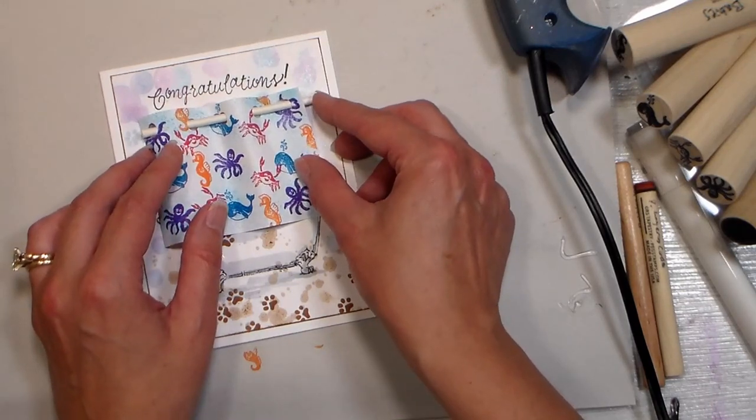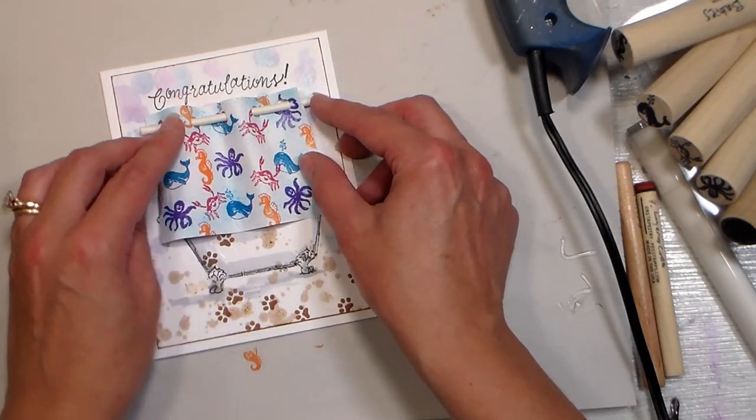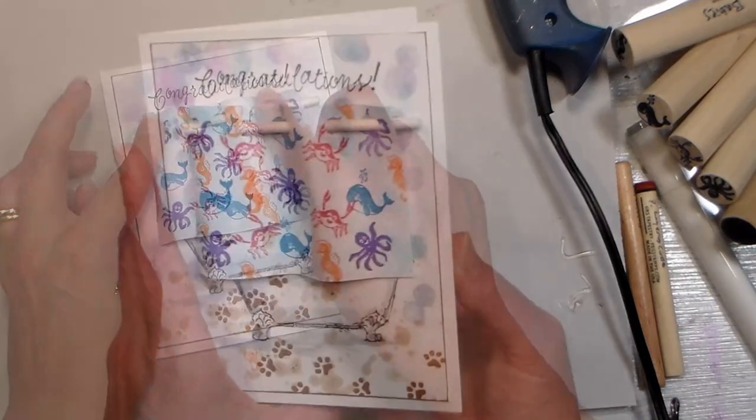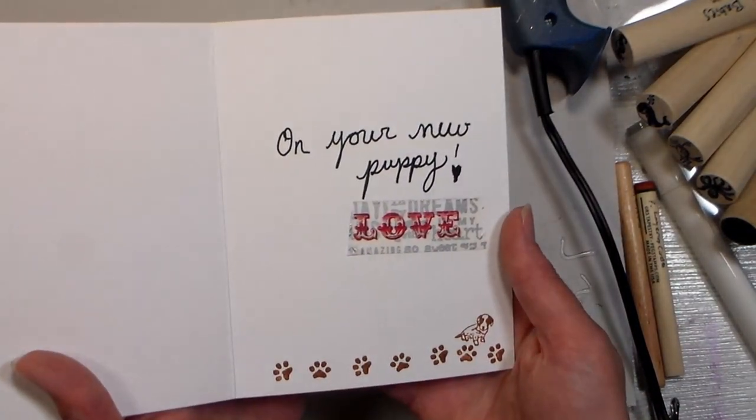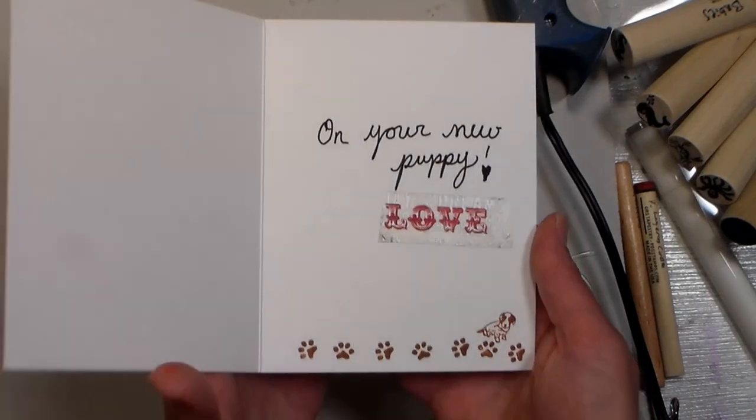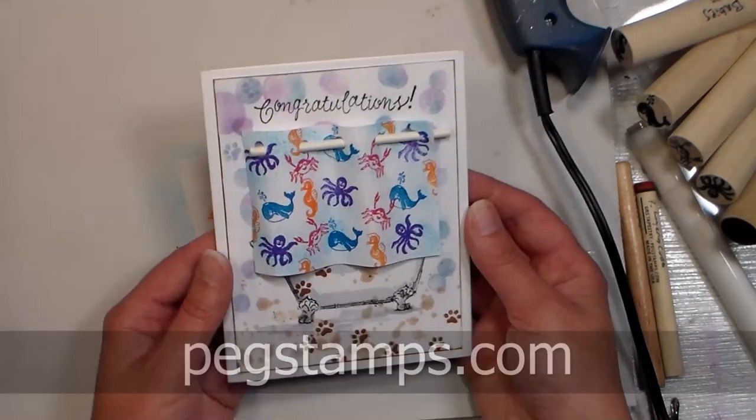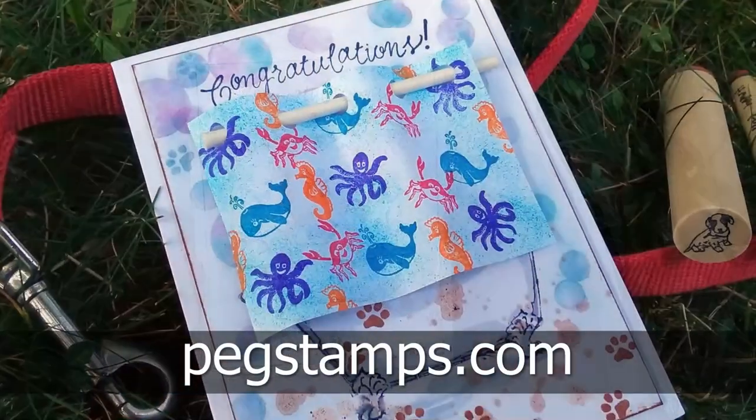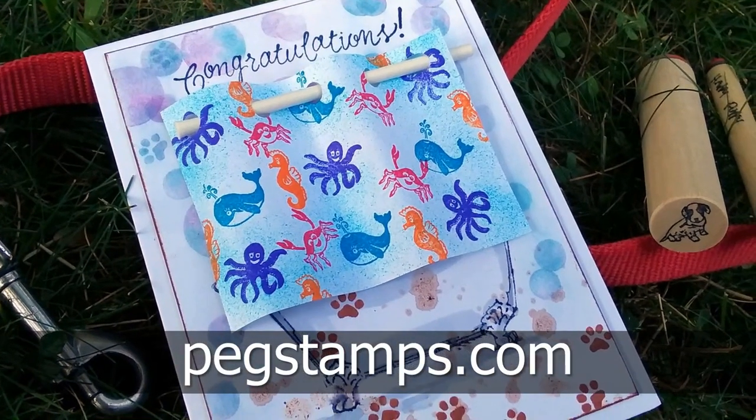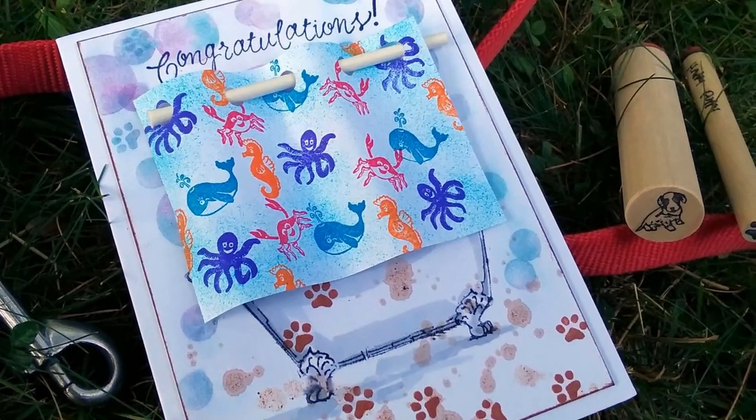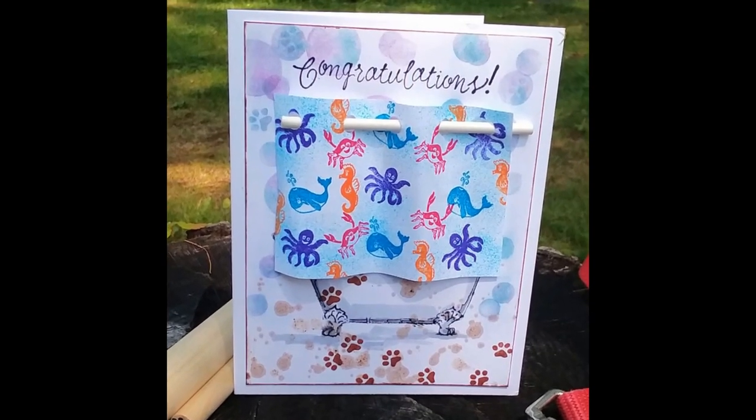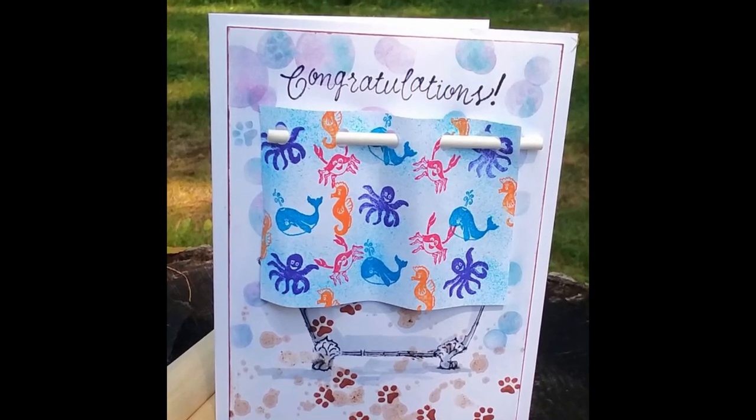And that's pretty much it. I hope you enjoyed this tutorial. I know it's kind of an odd occasion, but sometimes those are the funnest cards to make. I just put a little love washi tape on the inside because I did not have any dog themed washi tape. Can you even believe it? I know, right? Please visit our sponsor pegstamps.com to find the supplies I used today, give me a thumbs up if you liked this video, and until next time, happy crafting!